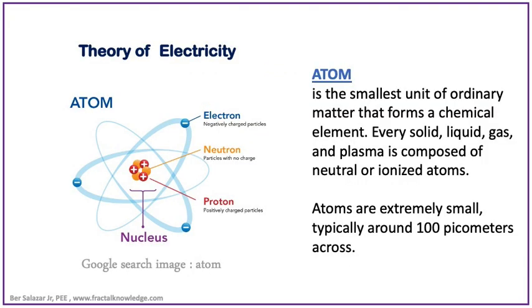Atom is the smallest element of matter. It can be in a liquid, a solid or gas or plasma. They are too small to see, typically 100 picometer across.